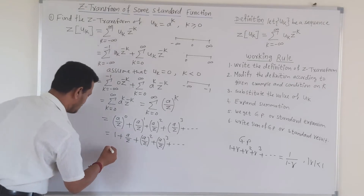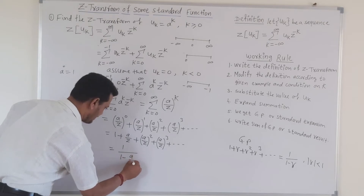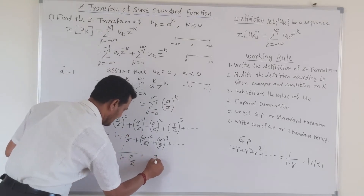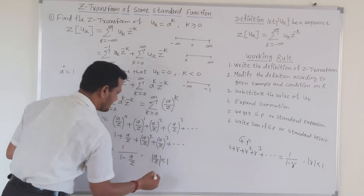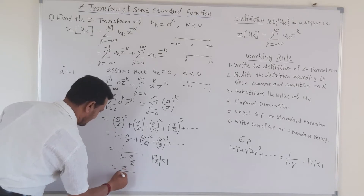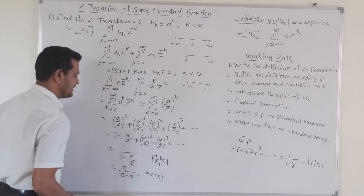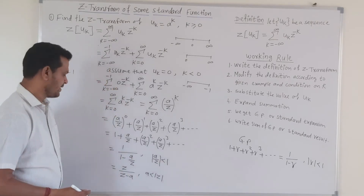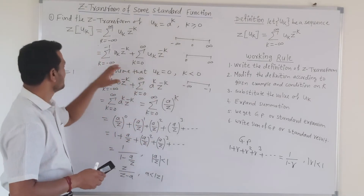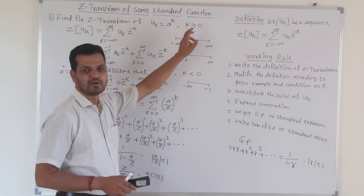Comparing with the geometric progression, r equals a/z, so the sum is 1/(1 − a/z). Simplifying this gives z/(z − a), with the condition that |a| < |z|, obtained by taking z to the right side. This is the Z-transform of a^k for k ≥ 0.